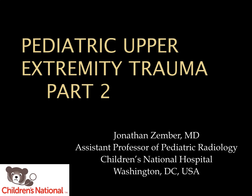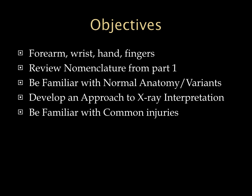Hello everybody, Jonathan Zember here again for part 2 of my lecture on pediatric upper extremity trauma. Again we're going to be focusing on x-rays. The objectives for this lecture are to go from the forearm down through the fingers, review nomenclature from part 1, familiarize ourselves with normal anatomy and variants, develop an approach to x-ray interpretation, and familiarize ourselves with common injuries.